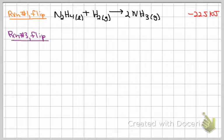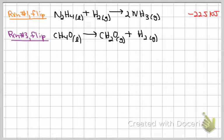Then I decided to go to reaction three, and I flipped that one too. When I do that, it looks like this. I went to reaction three because reaction three contained the other reactant I need, CH4O.